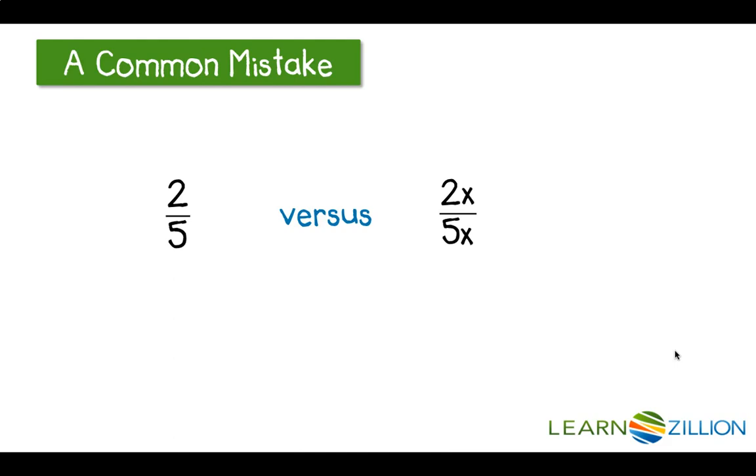Sometimes when we see rational expressions with unknown variables, we forget the things that we already know about them. Remember, x is simply standing in for a number. So we can still rewrite rational expressions with variables the same way that we would write them with just numbers.